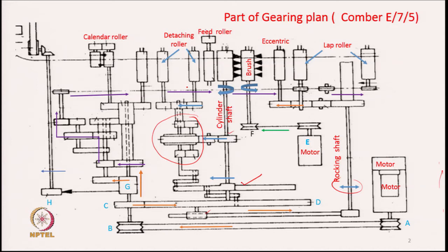The drive to the cleaning roller — the brush — comes from an independent motor E. Motor E drives the brush roller through pulleys. The brush roller contains brush on its surface, which cleans the needles of the cylinder comb. The brush turns at a constant speed depending on the motor speed and the diameter ratio of the two pulleys. The motion path goes from motor E to pulley F, which is mounted on the shaft carrying all the brush rollers.